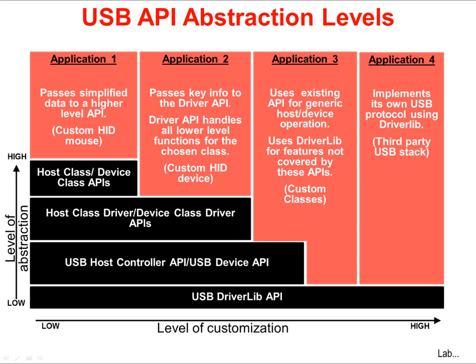Where should you start? For an application that involves implementing its own USB protocol using DriverLib, working with the USB Driver API will be a recommended approach. This provides the lowest level of abstraction, giving you the most amount of visibility and control. This is represented in Application 4 in the diagram on the slide. For applications in between, like examples 2 and 3, a user can pick and choose a level of abstraction that is not too high or too low. Note that devices that resemble existing applications — and many do — require significantly less new code.